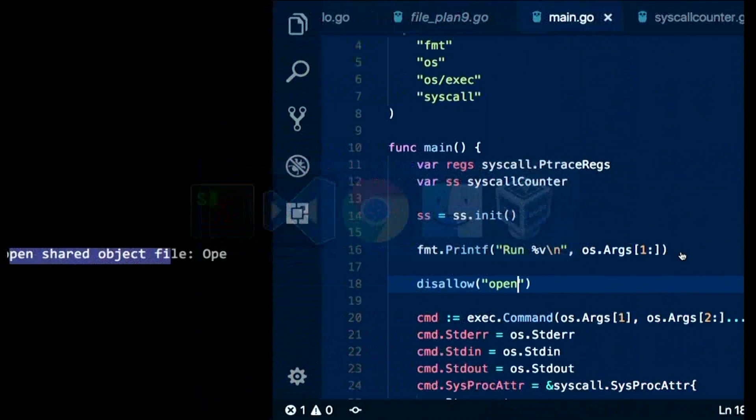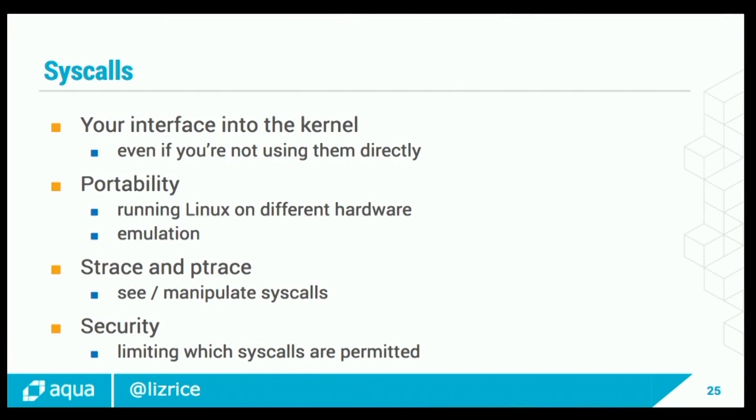To summarize: even though most of you have never actively written the word syscall in your code, you never realized you were actually calling syscalls all the time. You're using this stuff every single day of your programming life. I think it's really interesting the way they all boil down to the same mechanism of setting up registers and triggering a trap. The fact that you can use them for emulation and portability is cool. We've seen how to use strace to see what syscalls are being called, scratched the surface of what you can do with ptrace, and seen how to use security profiles to limit what a particular process is allowed to do. The code will be available at strace-from-scratch.